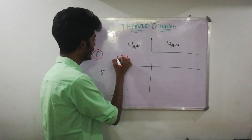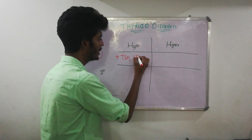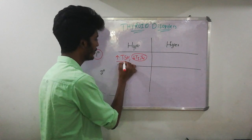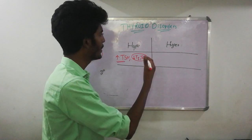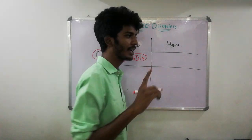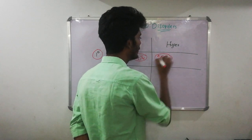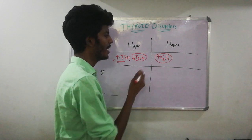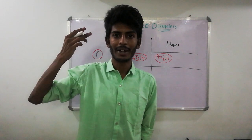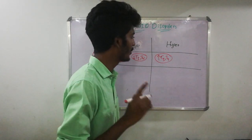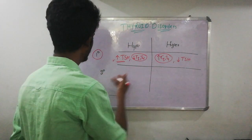In primary hypothyroidism, TSH levels are elevated, but T3 and T4 are decreased — because even though there is enough TSH stimulation, the thyroid gland itself is not working. In primary hyperthyroidism, the defect in the gland leads to elevated T3 and T4, produced independently of TSH. More T3 and T4 triggers the negative feedback, signaling the anterior pituitary to stop producing TSH, so TSH levels are decreased.